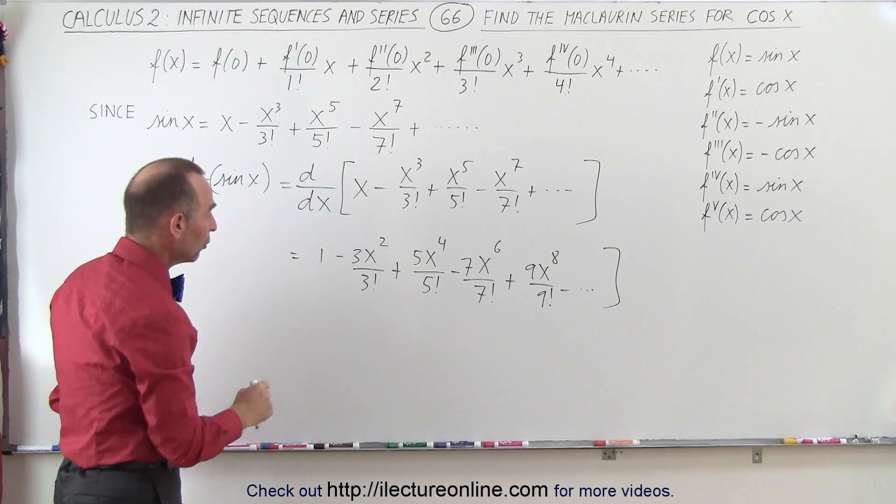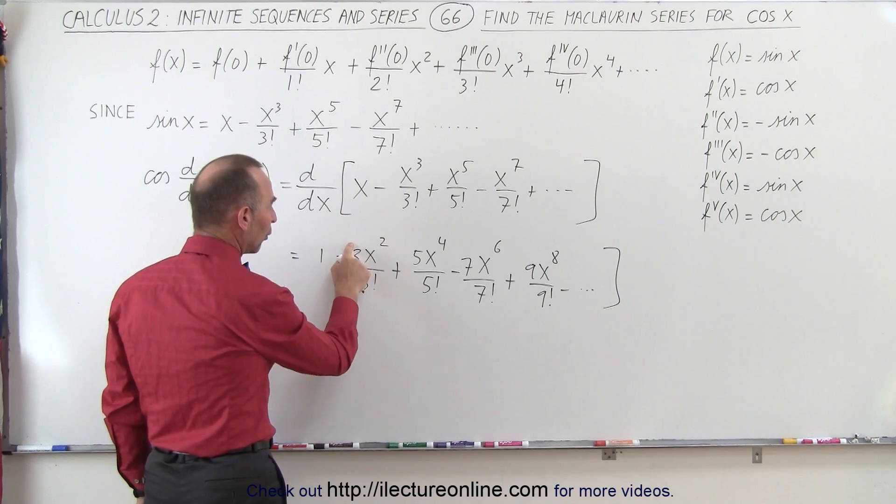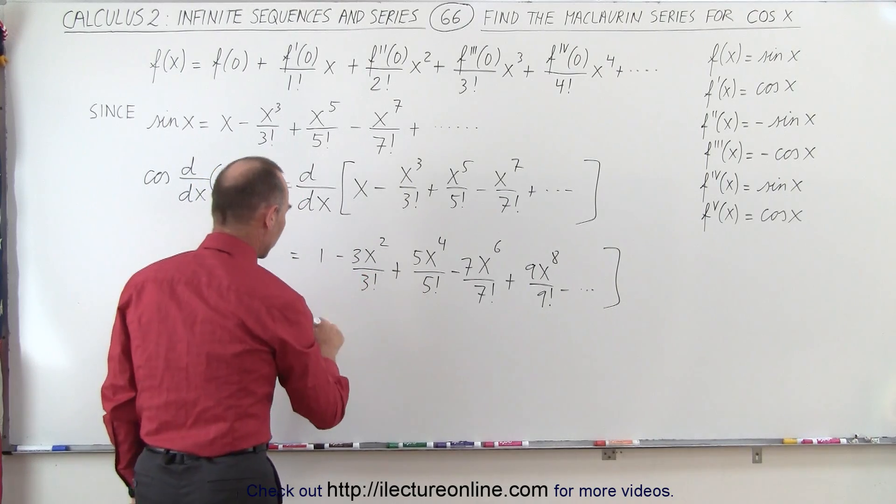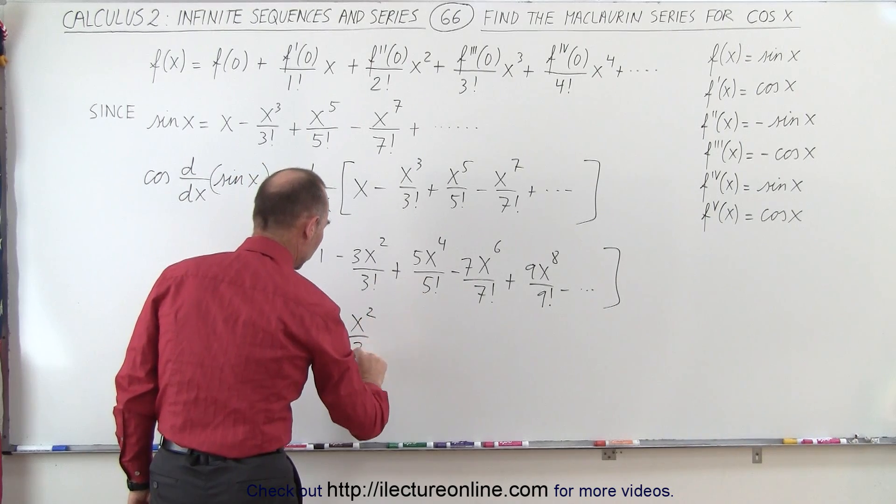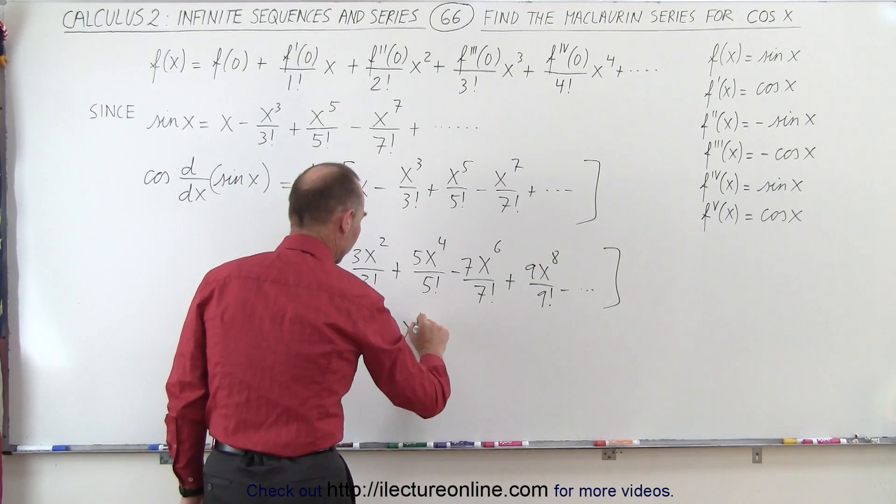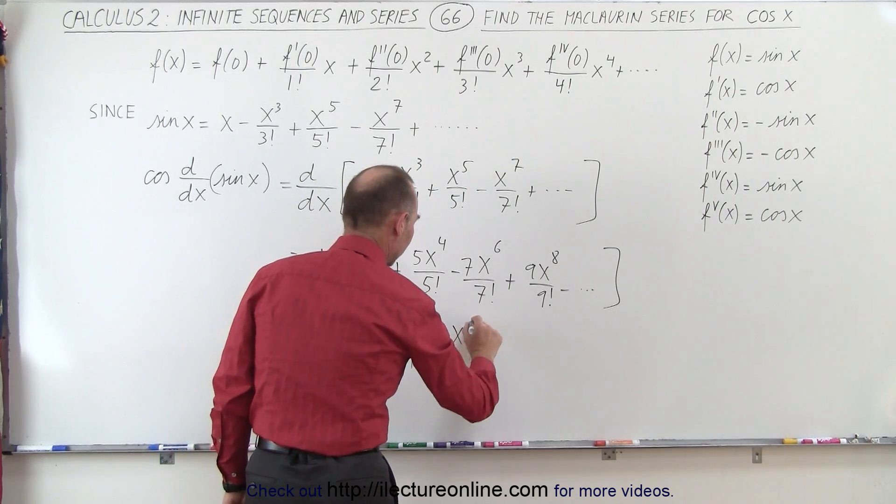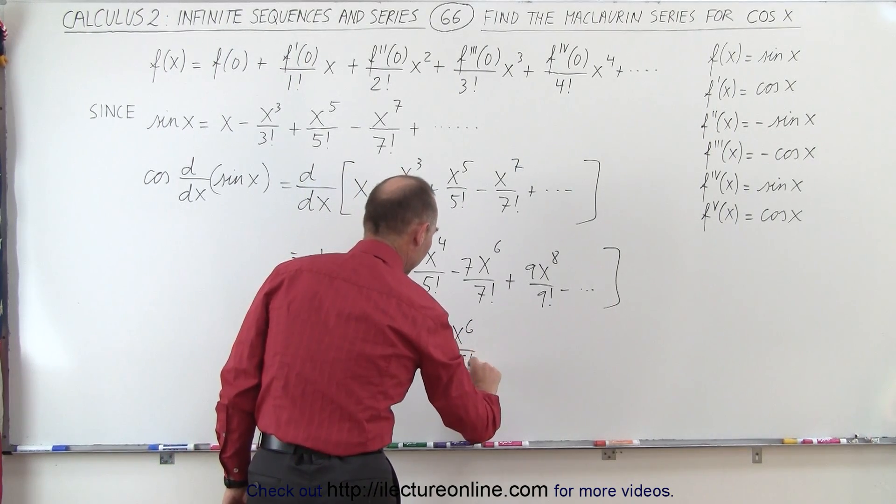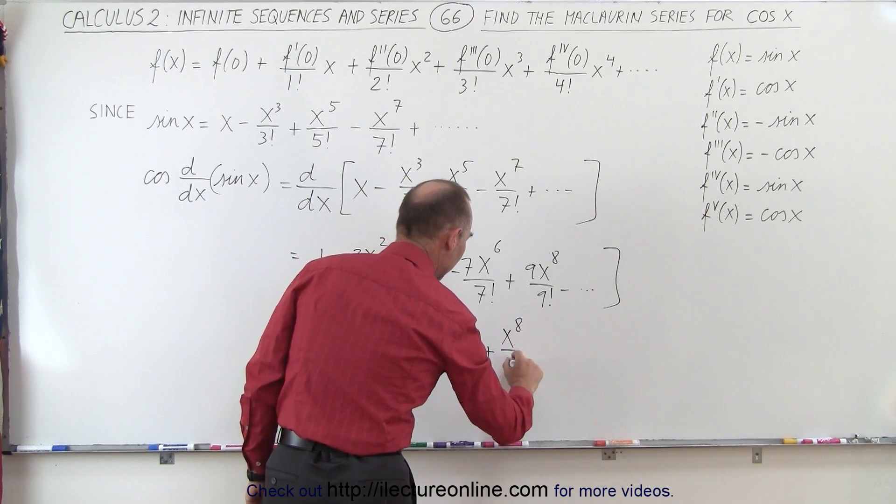Now, to simplify that, notice if we divide 3 by the factorial of 3, that actually becomes 1 over the factorial of 2. So this is equal to 1 minus x²/2! plus x⁴/4! minus x⁶/6! plus x⁸/8!.